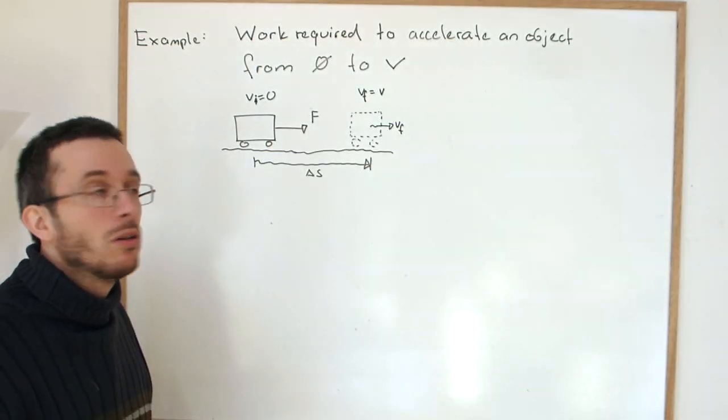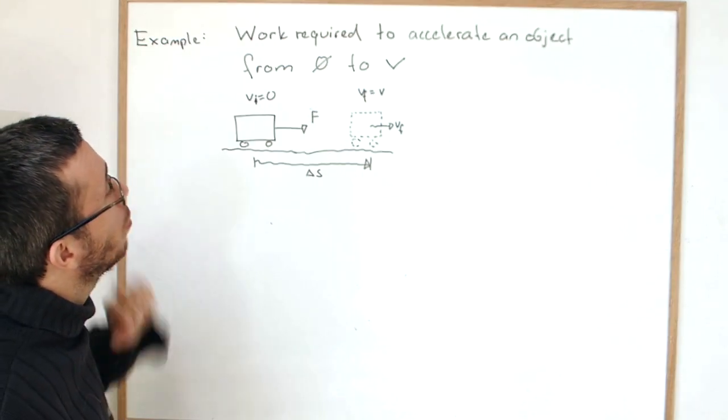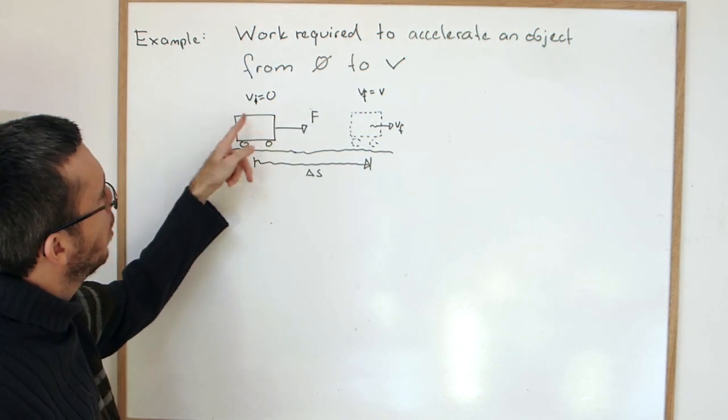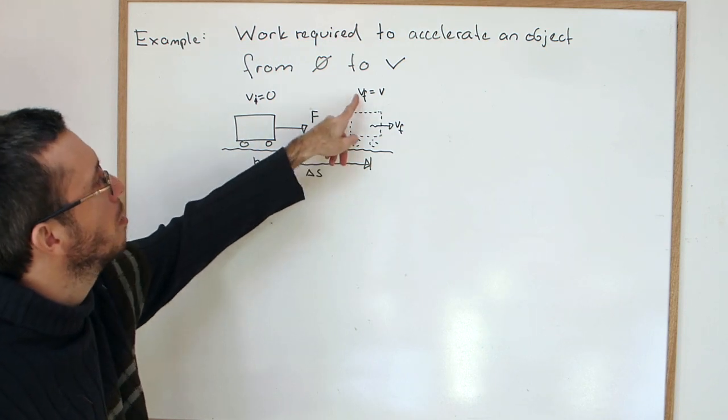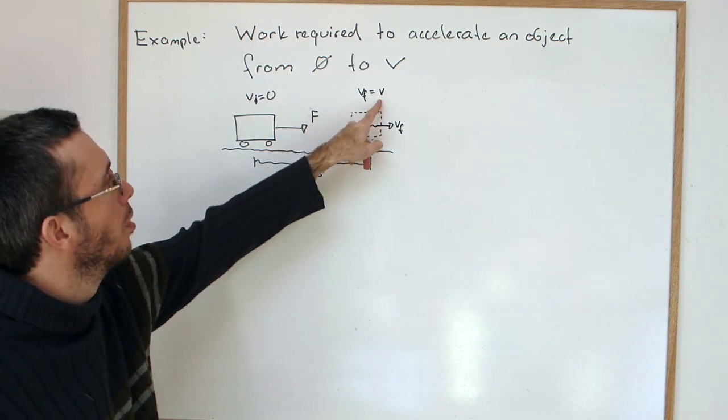In this video, we are going to calculate the work required to accelerate an object at initial velocity zero to a final velocity of v.